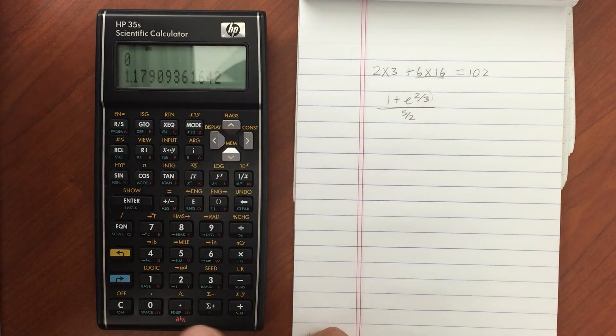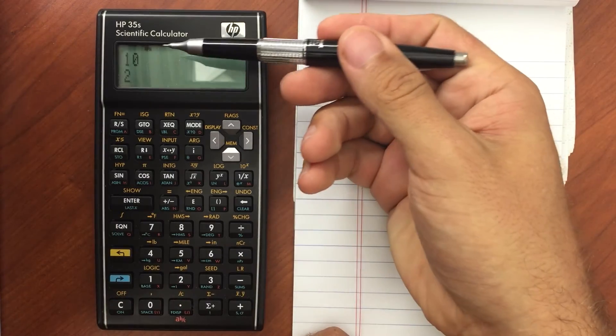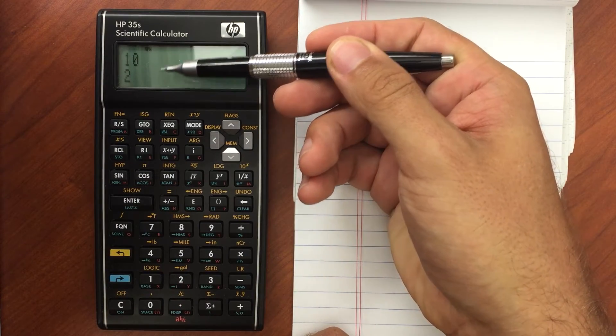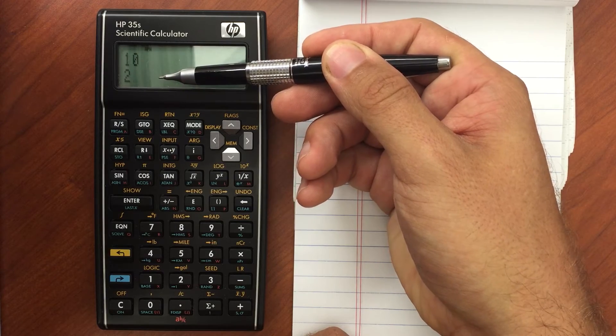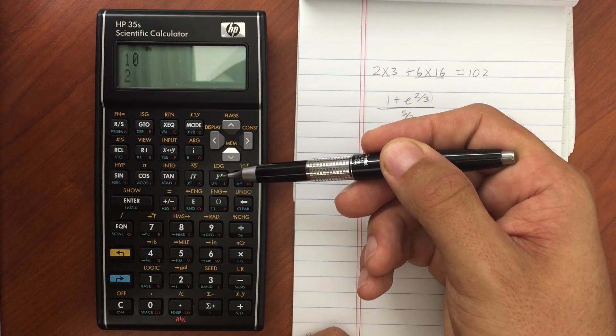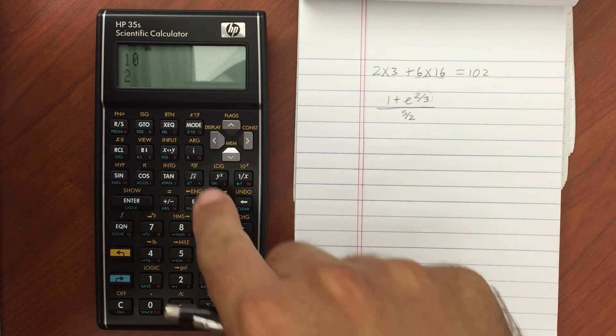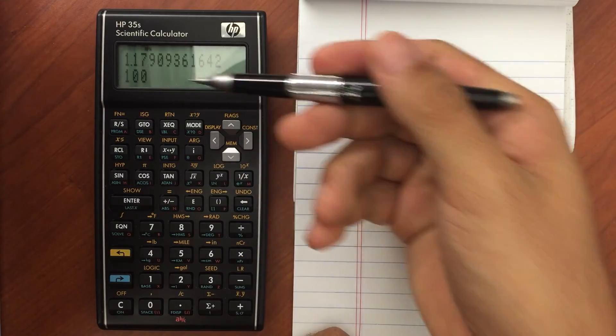Y to the x. So 10, enter 2. I've got 10 in my y register. 2 in my x register. So if I hit y to the x, it would be 10 squared. 100.